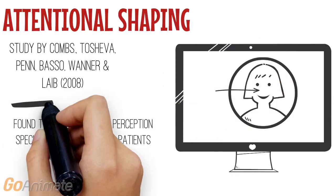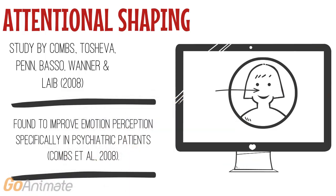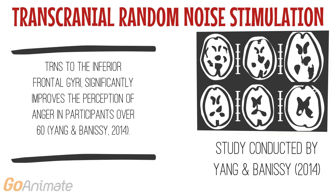Furthermore, attention shaping interventions, utilising computerized attentional prompts which focus participants' attention towards the central region of the face, have been found to improve emotion perception, specifically in psychiatric patients. Thus, these can be implemented therapeutically in schizophrenic patients to assist this demographic of individuals to enhance their social functioning, as social impairment is frequently cited as a prominent symptom of this disorder.